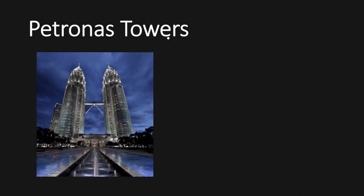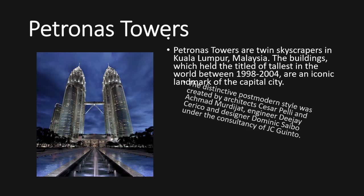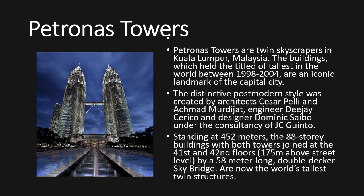Good day everyone, my name is Jan-Louis Dorian, and this is our last example of engineering structure. The Petronas Towers are twin skyscrapers in Kuala Lumpur, Malaysia. The buildings held the title of tallest in the world between 1998 and 2004 and are an iconic landmark of the capital city. The distinctive post-modern style was created by architects Cesar Pelli and Ahmad Mouryek, engineer T.J. Cerrico, and designer Dominic Saibo, under the consultancy of J.C. Kingdong. Standing at 452 meters, the 88-story buildings have both towers joined at the 41st and 42nd floors, 175 meters above street level, by a 58-meter-long double-decker sky bridge, and are now the world's tallest twin structures.